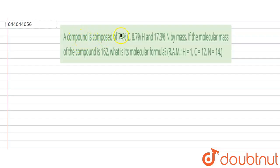The question is: a compound is composed of 74% carbon, 8.7% hydrogen, and 17.3% nitrogen by mass. If the molecular mass of the compound is 162, then what is its molecular formula?